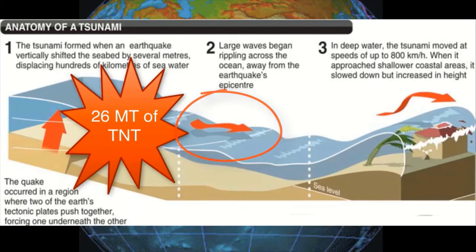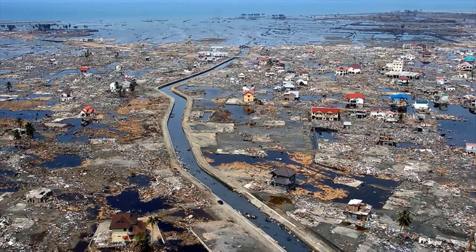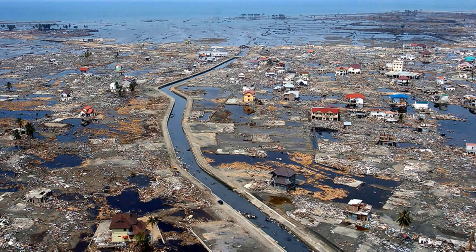But in shallow water near coastlines, that wave slows down to only tens of kilometers per hour. But in doing so, it forms large destructive waves. Scientists investigating the damage in Aceh found evidence that the wave reached a height of 24 to 30 meters, that's in excess of 100 feet.